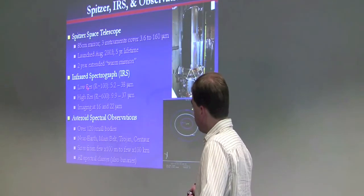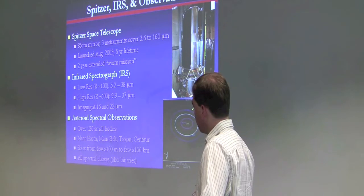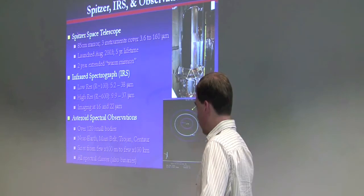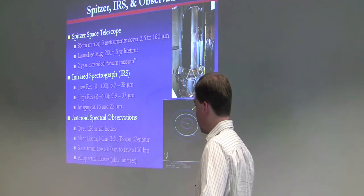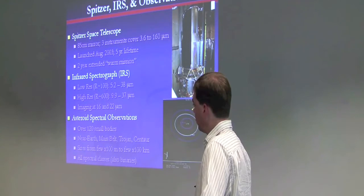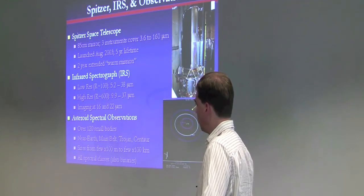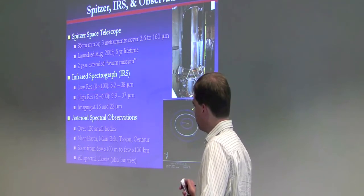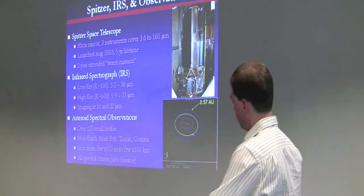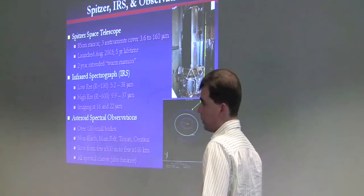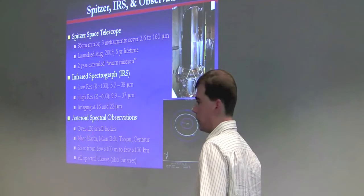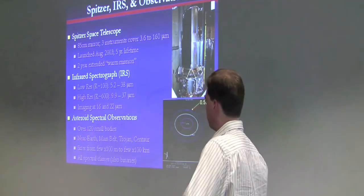The infrared spectrograph measures spectra with a resolving power of about a hundred, from 5.2 to 38 microns. It also has a higher spectral resolution mode that operates from about 10 to 37 microns. And also two imaging bands at 16 and 22 microns. All of the data that I'll talk about here, I believe, are taken with a low resolution mode. There have been over 120 small bodies observed with Spitzer so far, and there are several programs ongoing, which should increase that by a few tens of asteroids before the cryogen runs out in March.